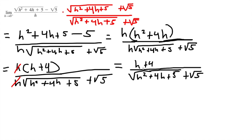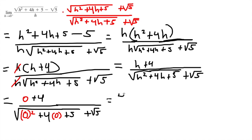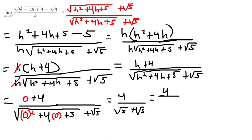Plugging in h equals 0: on the top we get 0 plus 4, which is 4. On the bottom we get the square root of 0 plus 0 plus 5, plus the square root of 5. That simplifies to the square root of 5 plus the square root of 5, which equals 2 square roots of 5, giving us 4 over 2 square root of 5.